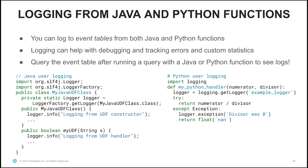When you write Java and Python functions, you can log to event tables — powerful functionality that helps with debugging and tracking errors and custom statistics. After running a query with a function that performs logging, you can query the event table to see the logs. For Java, use the SLF4J logger instantiated as a static variable in your class, then call logger.info, logger.debug, or other log levels. For Python UDFs, import the logging module and log whenever something interesting occurs — for example, logging when a divisor is zero. You can then query the event table to figure out what went wrong.